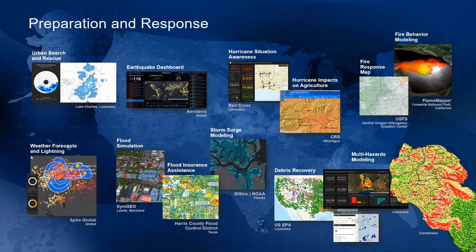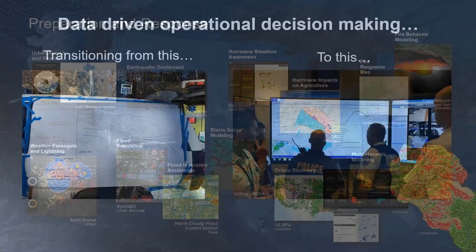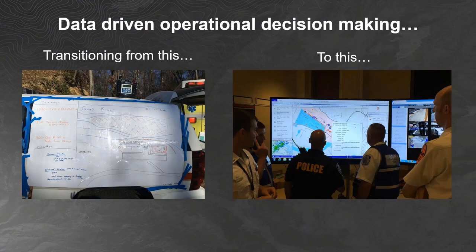We see these capabilities applied across the spectrum of public safety operations and response — whether we're dealing with a significant hurricane, earthquake, or flooding events. These mobile applications and visual products can support your agency in collecting data, analyzing it, understanding what the impacts are, and making good decisions. Ultimately, we're trying to go from that hand-drawn map on the left to the dynamic map on the right.